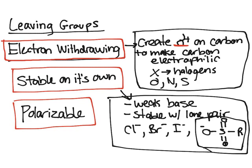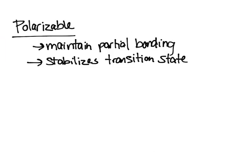Finally, I'll do polarizable on the next page. So, when we talk about polarizable, we mean to maintain partial bonding with the carbon atom in the SN2 reaction. So, what this does is a molecule that is more polarizable will stabilize the transition state to decrease the activation energy.